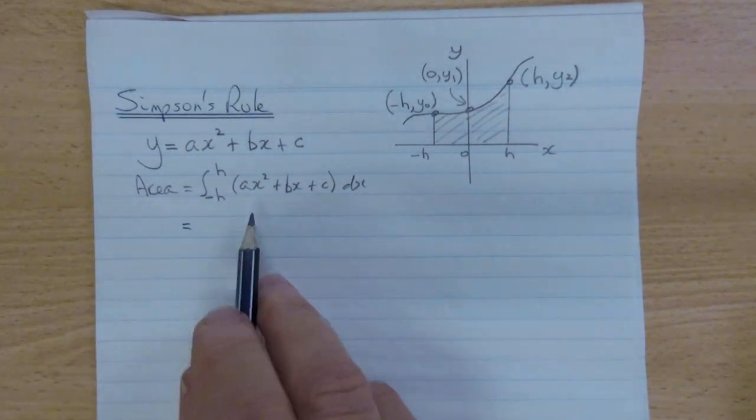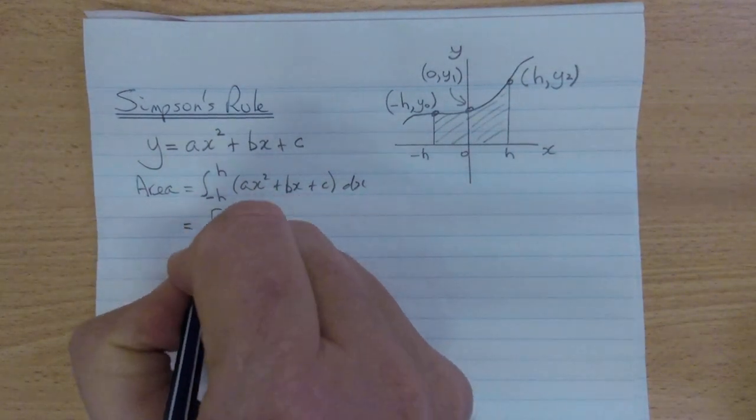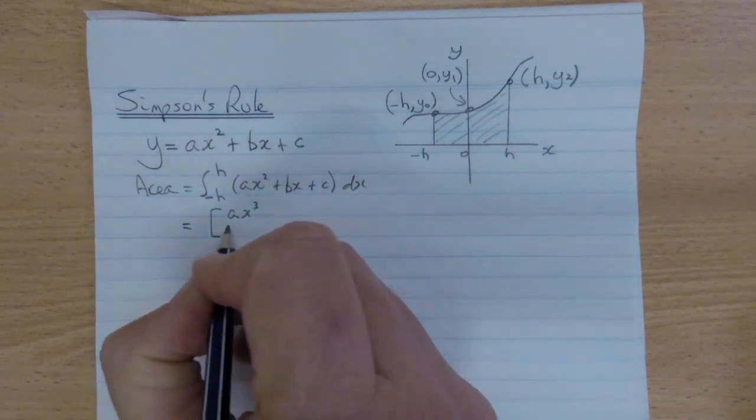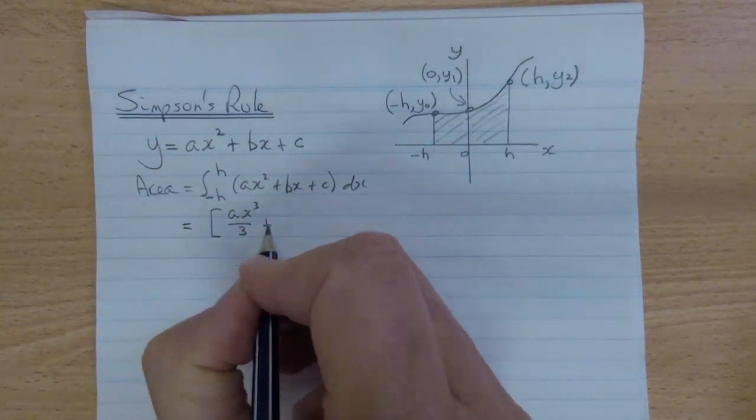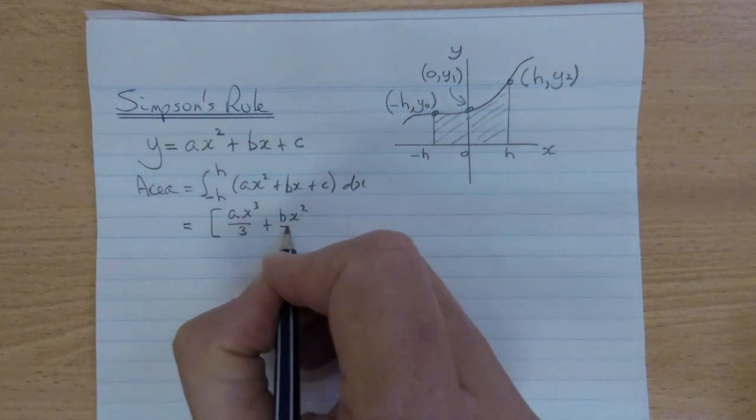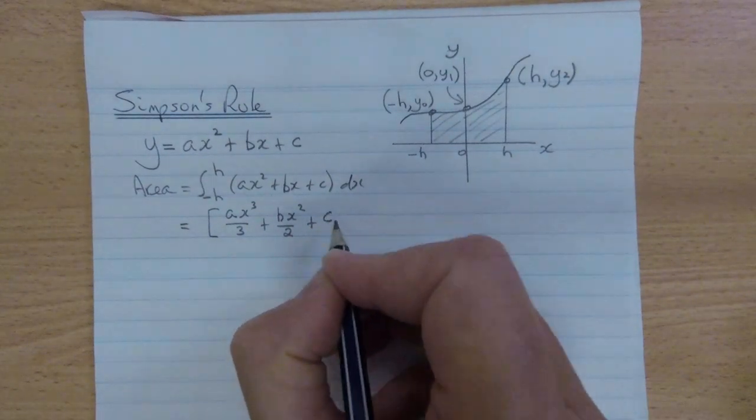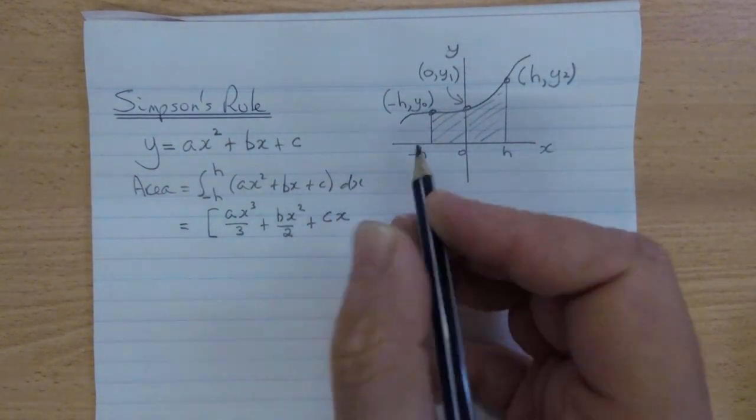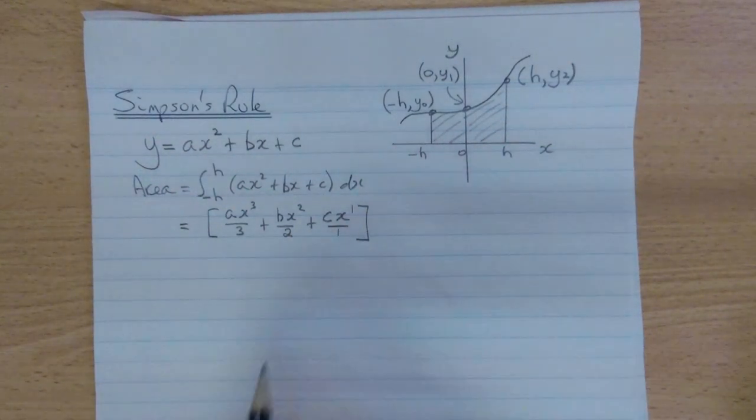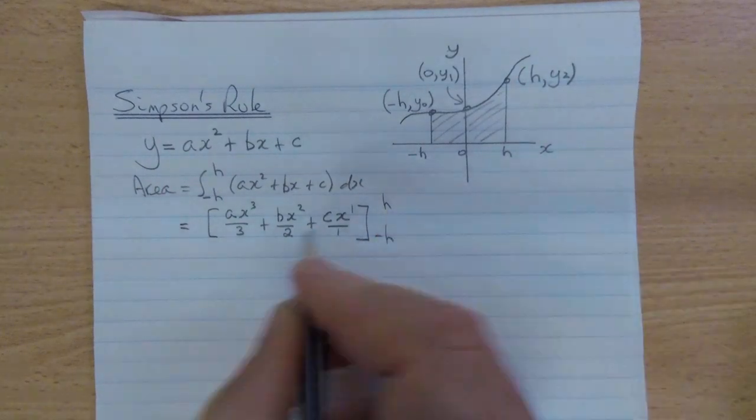The advantage of using a parabola is that it's a very simple integral to perform. So power increases by 1, and divided by the new power. Constant b, power increases by 1, and divided by the new power. Constant c, multiplied by x, divided by the new power, it's power of 1 divided by 1. I'm just writing that to be complete, we wouldn't normally. And our limits are minus h and h.